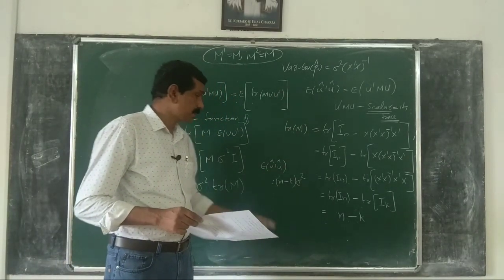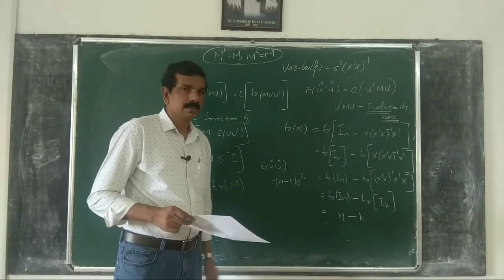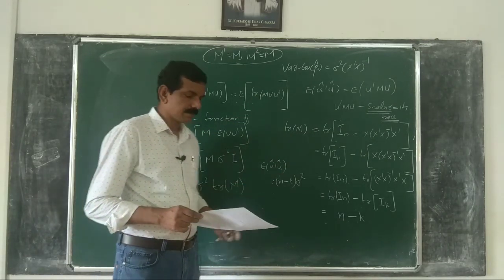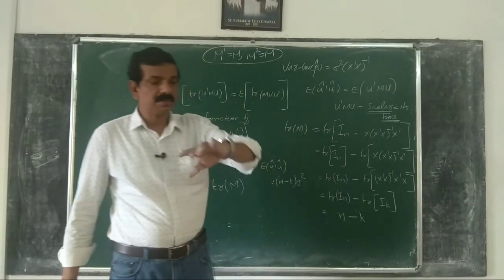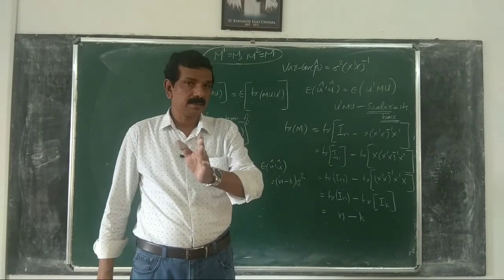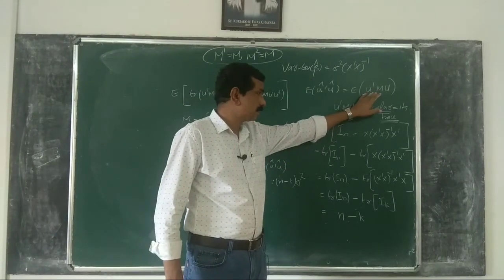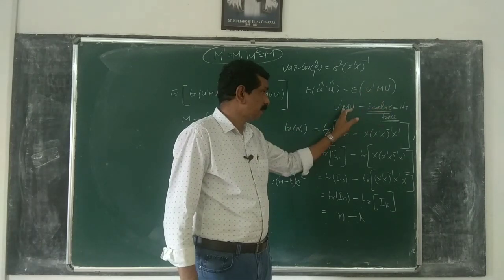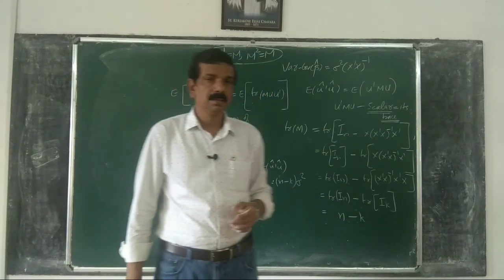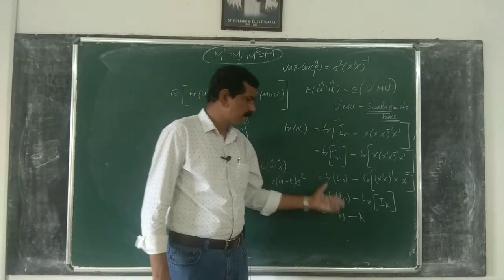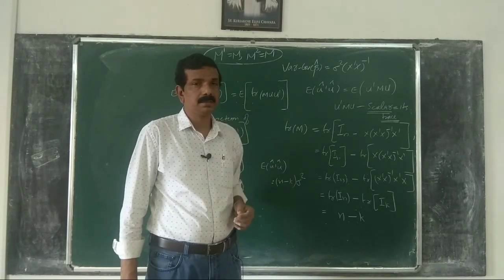So this is the proof that the expected value of u-hat'u-hat divided by n minus k equals sigma-squared. To derive this result, recall the properties of the trace — particularly that a scalar u'Mu equals its own trace. That is the final proof that the expected value of sigma-hat squared equals sigma-squared.